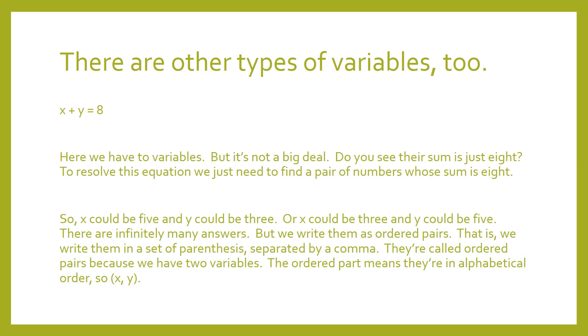Now, there are other types of variables too. There's things called dependent and independent. Like this one right here says one number plus another number equals 8. Now, they could be equal to each other, but they don't necessarily have to be. It doesn't say x plus x. It says x plus y. So, maybe they're both 4. Maybe it's 7 and 1. Maybe y is 1 and x is 7. Or maybe x is 1 and y is 7. We don't really know. There's infinitely many answers to this kind of equation.